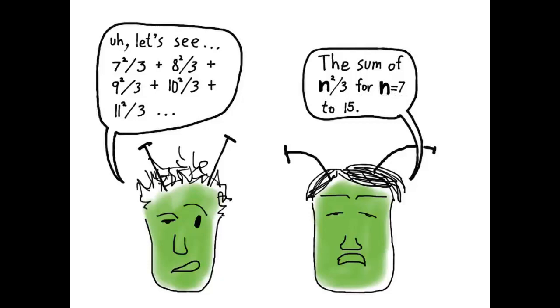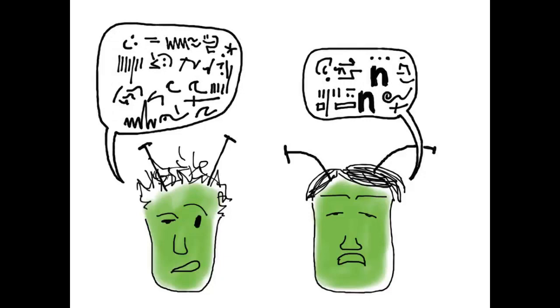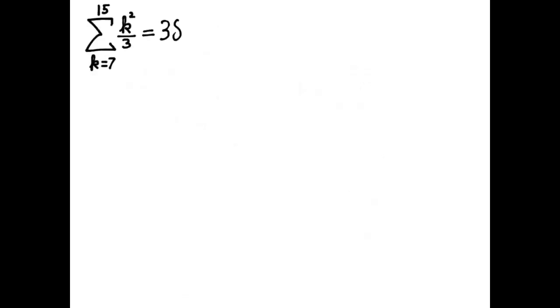Actually, if they were on another planet, maybe they'd be saying something more like this. So we just expressed the sum from k equals 7 to 15 of k squared over 3, and we found it to be 383.